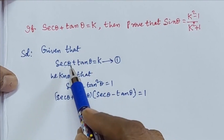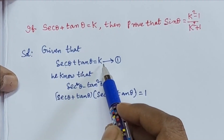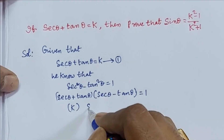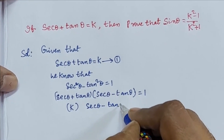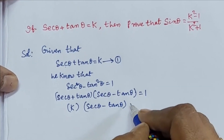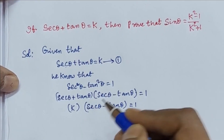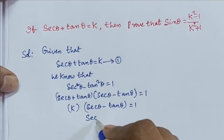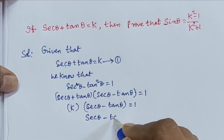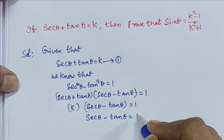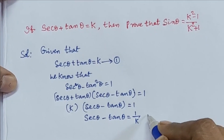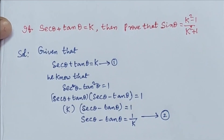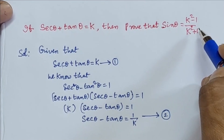Since secant theta plus tan theta equals k, substitute k in its place. Then secant theta minus tan theta equals 1 by k. Take this as equation 2. Our goal is to get sin theta equals k squared minus 1 by k squared plus 1.